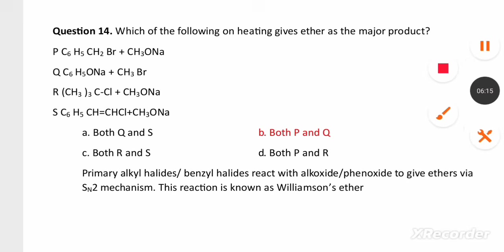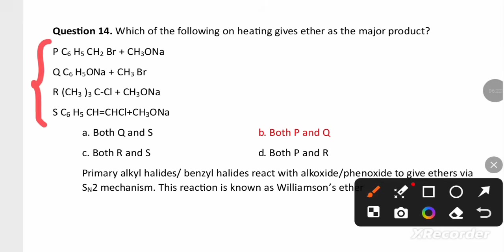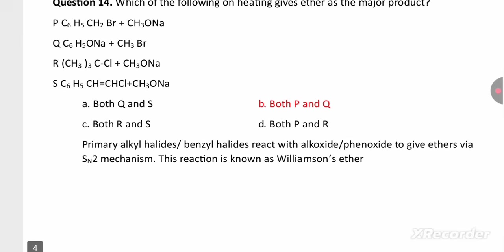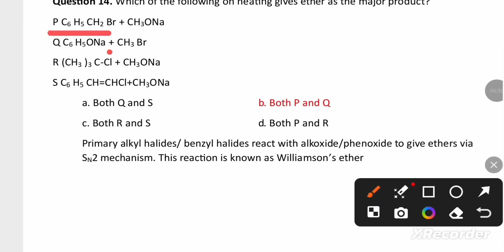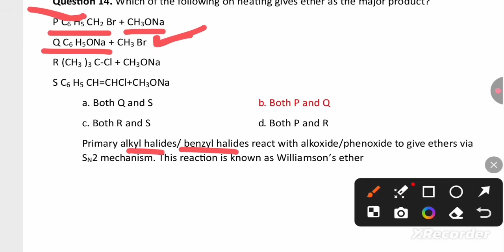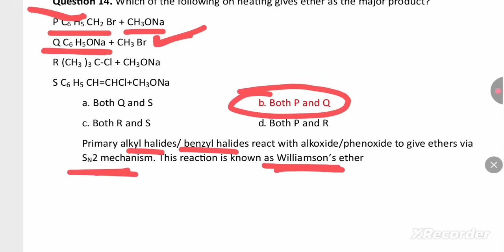The next question asks which among options P, Q, R, S on heating gives an ether. By Williamson's ether synthesis, P and Q can produce ether because P has a primary alkyl halide and Q has a benzyl halide. Primary alkyl halide and benzyl halide on reacting with sodium methoxide or sodium phenoxide can both produce ether via SN2 mechanism. This reaction is known as Williamson's ether synthesis, so both P and Q are the right answer.